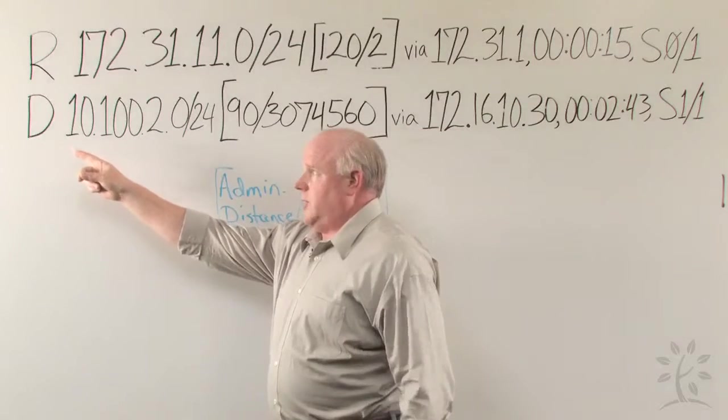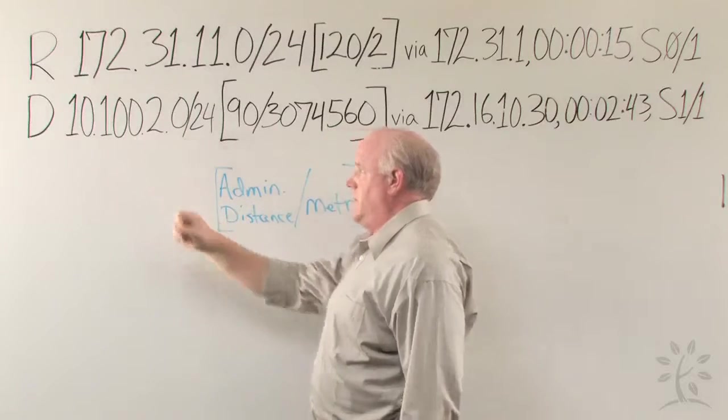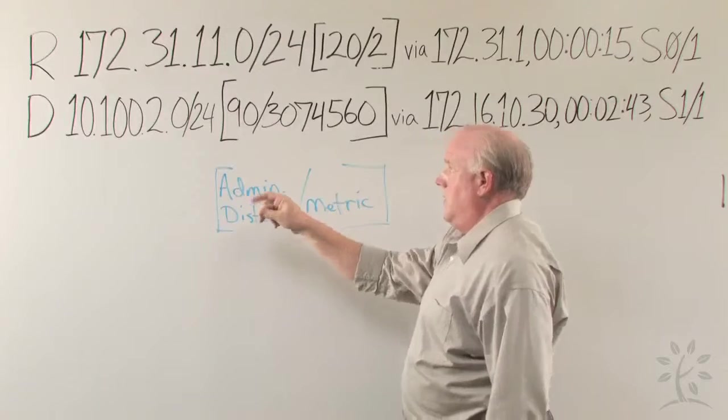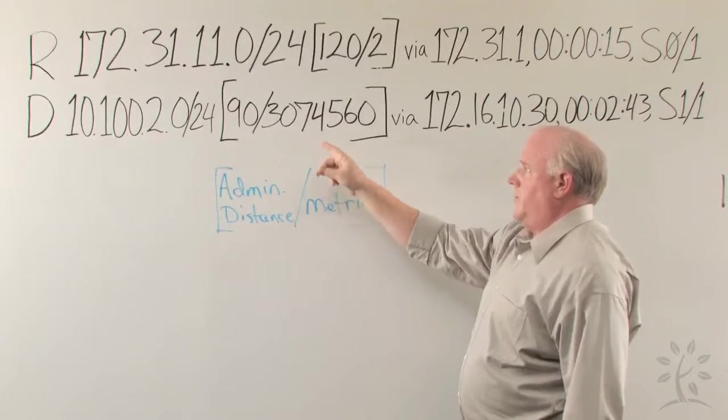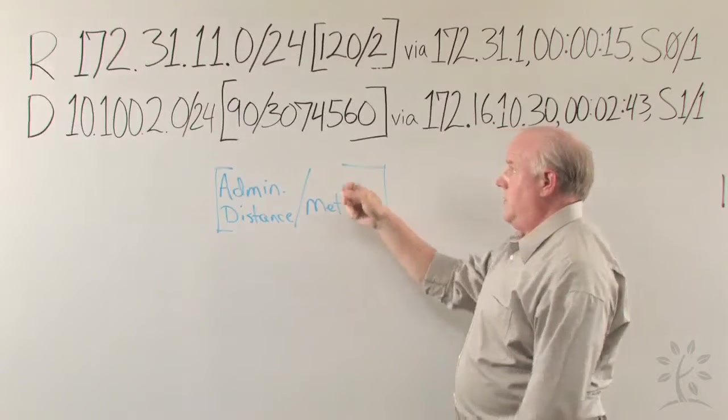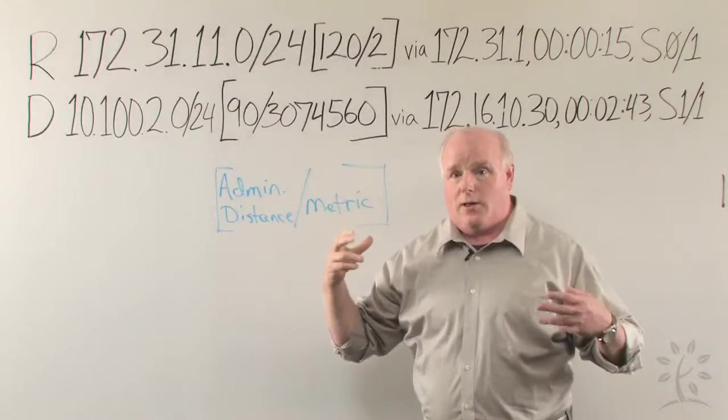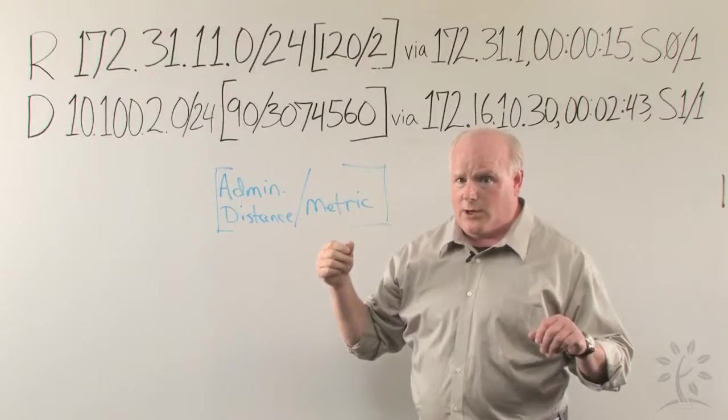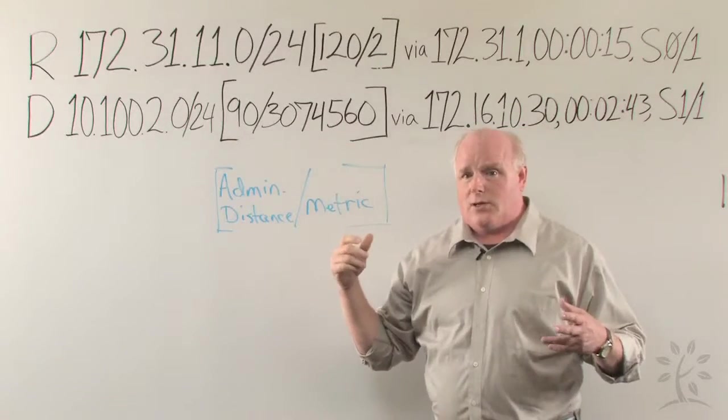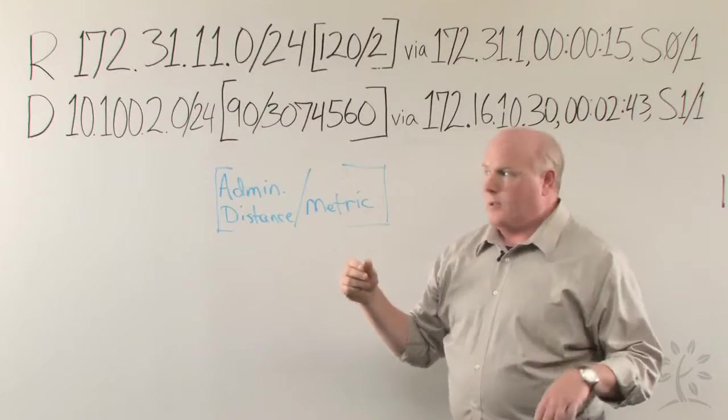So using the EIGRP protocol, there's a route to this network with an administrative distance of 90, and a routing metric of 3074560. Big numbers. Now we don't need to worry about the metric, because there are many more calculations going on in the background for EIGRP, and each protocol is going to have a metric that comes out just a little bit differently, or considerably different.